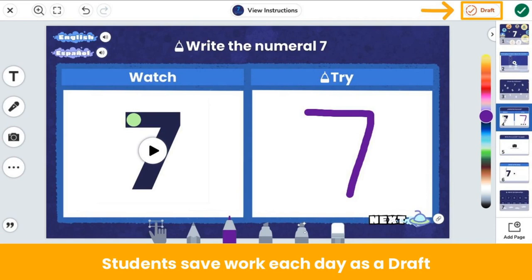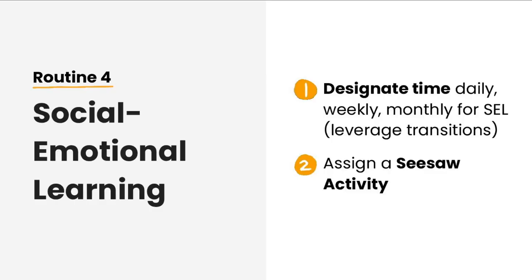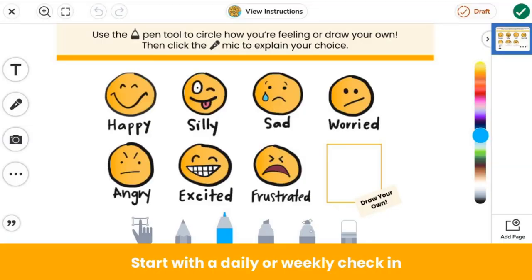There are so many ideas for how to use Seesaw in center, stations, and rotations. Now we're going to move on to our last routine — routine four: social emotional learning. Seesaw makes it easy to integrate social emotional learning into different aspects of your day. Leverage transitions like the beginning or end of the day, before or after lunch, or between subjects to reinforce important SEL skills. Simply assign a Seesaw activity for students to complete during your designated SEL time or at any point during the day. An easy way to start is with a daily or weekly check-in where students practice identifying and naming their emotions and explaining why they feel that way. Teachers use these check-ins to follow up with students who may need extra support as well.